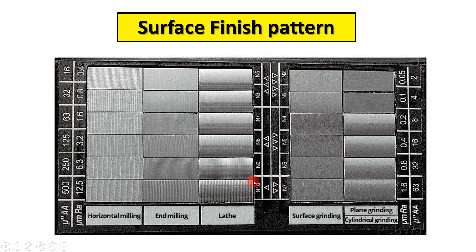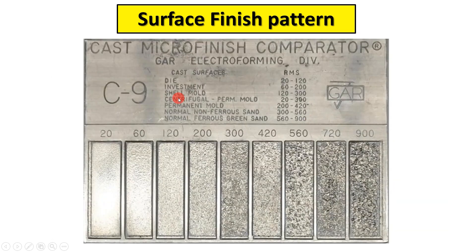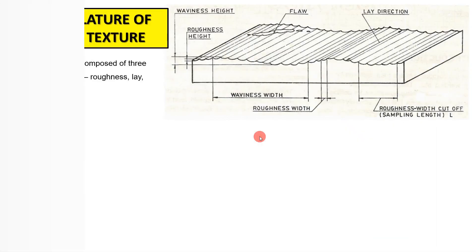There are three different ways to represent surface finishing: using a triangular symbol, using a finishing grade such as N10, N9, N8, N7, or using a numeric value. For example, a horizontal finish is obtained on a lathe, a fine finish is obtained on surface grinding. Surface finishing is generally measured in micrometers, ranging from rough finishing to fine surface finishing.